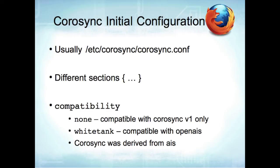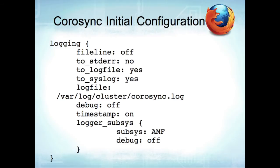The initial Corosync configuration file is usually at /etc/corosync/corosync.conf. It has different sections in curly braces. The first section is compatibility — it can be 'none', which means compatible only with Corosync, or 'whitetank', which is compatible with OpenAIS (which is basically where Corosync was derived from). All the examples say 'compatibility whitetank', so I don't know the exact pros and cons. Here's an example of the logging section: to_logfile yes, to_syslog yes, and you can toggle debug and timestamps.